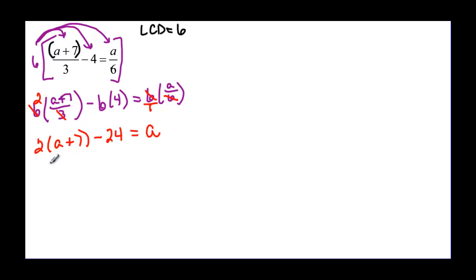So I cleared my fraction, so I am headed in the right direction. Now I just have to distribute the 2 and then go on from there. 2a plus 14 minus 24 will equal a. I have got like terms right here, so my 2a is going to be minus 10 equal to a. And since I only have an a on this side, I am going to subtract my 2a from both sides.